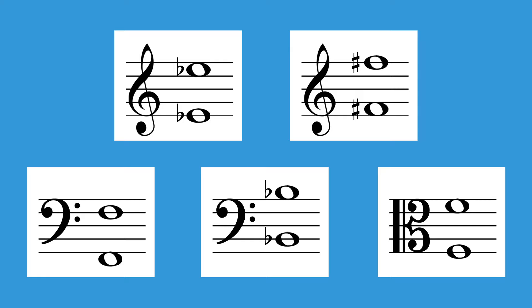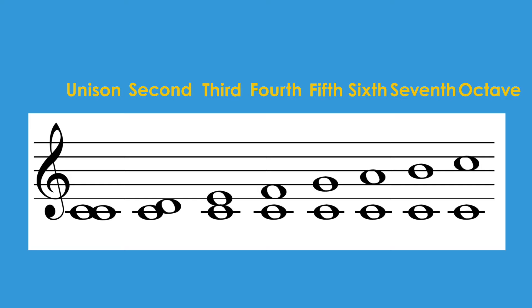Now that we know the distances, let's label the type for each of the intervals. In any major scale, the unison, fourth, fifth, and octave are perfect, and the rest of the intervals are major.